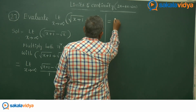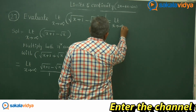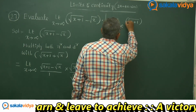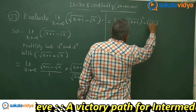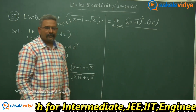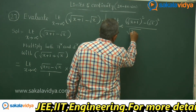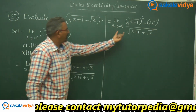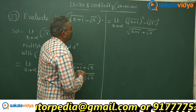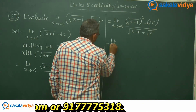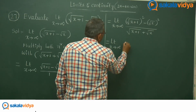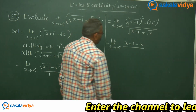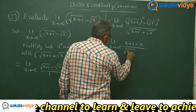We get limit x tends to infinity. The numerator can be written as root of x plus 1 whole squared minus root x whole squared, divided by root of x plus 1 plus root x. That means root of x plus 1 plus root x, multiplied by 1, gives root of x plus 1 plus root x in the denominator.